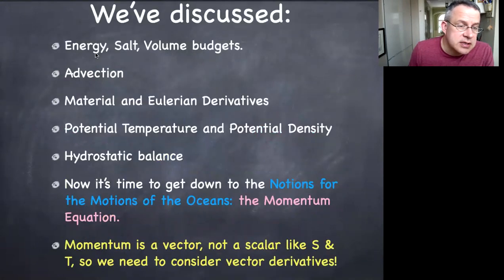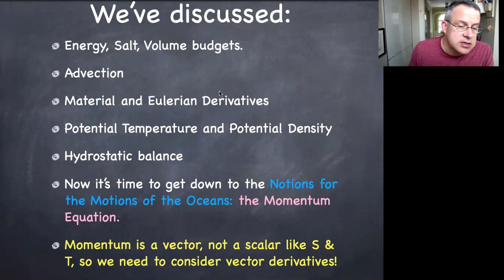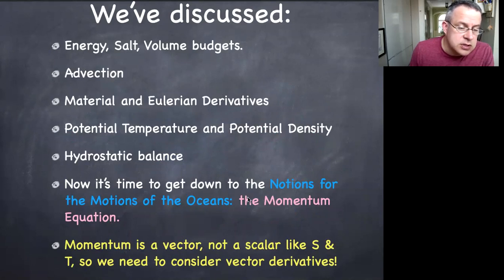We've already discussed energy, salt, and volume budgets — those are all scalar budgets. We've discussed the advection term, Lagrangian and Eulerian derivatives, potential temperature, potential salinity, and hydrostatic balance. Now it's time to get to the notions for the motions of the oceans: real applications of the momentum equation, not in a static setting, but in a setting where the motion is actually occurring.